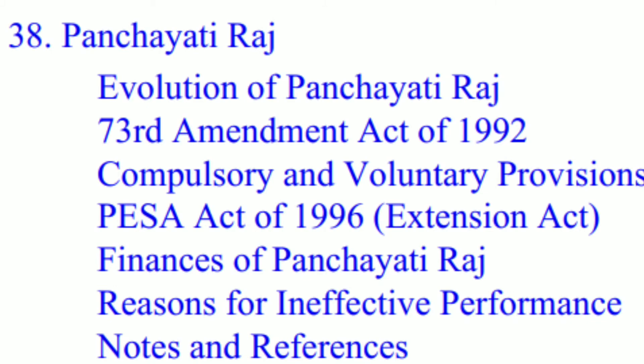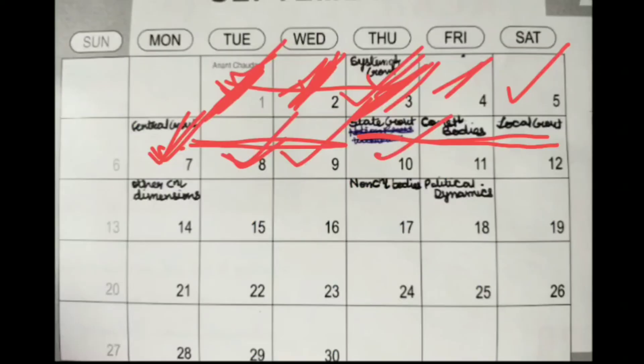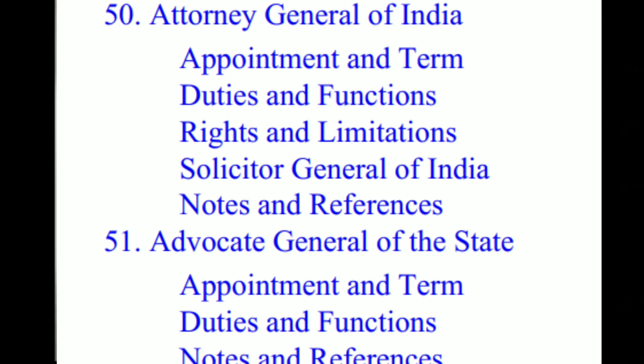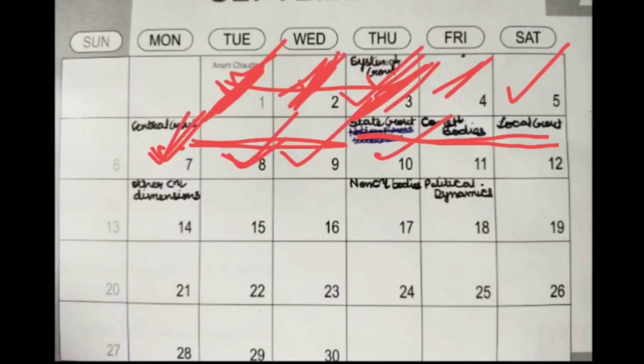On day eleven, you do chapter 38 — Panchayati Raj — entering local government. Along with that, you do chapter 48 on linguistic provisions, chapter 49 on CAG, chapter 50 on Attorney General, and chapter 51 on Advocate General. These are all four to two page chapters covering appointments, terms, duties, functions, roles, and compositions.